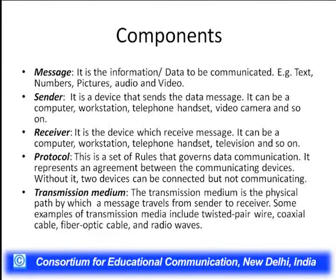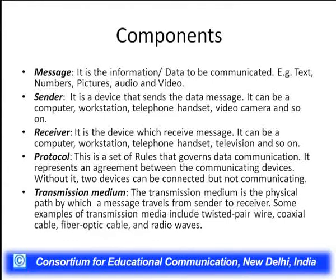The message is the information or data which is communicated — it could be text, numbers, pictures, audio, video, etc. The sender is the device that sends the message; it can be a computer, telephone, handset, video camera, etc. The receiver is the device which receives the message — again it could be a computer, telephone, etc. Protocol is the set of rules that governs data communication; it is represented as an agreement between the communicating devices — without it, two devices can be connected but cannot communicate. Transmission medium is the physical path by which the message travels from the sender to the receiver.